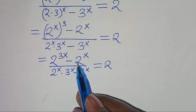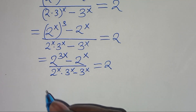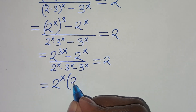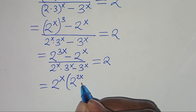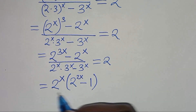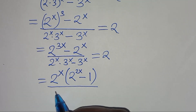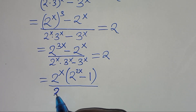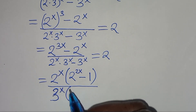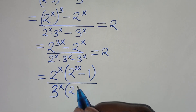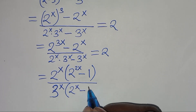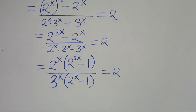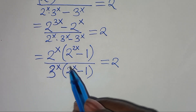From here we can factor out 2^x from the numerator, giving 2^x times (2^(2x) minus 1). In the denominator, 3^x is common, so we factor out 3^x, giving 3^x times (2^x minus 1). This equals 2.